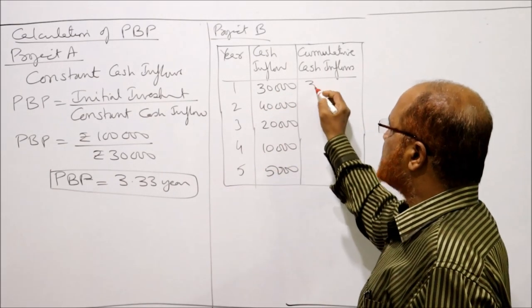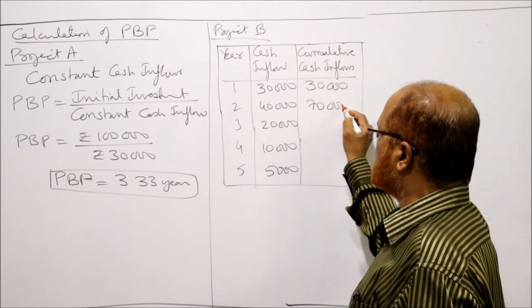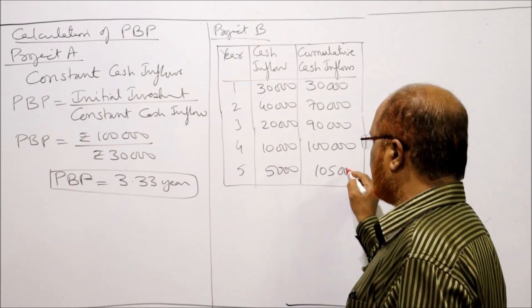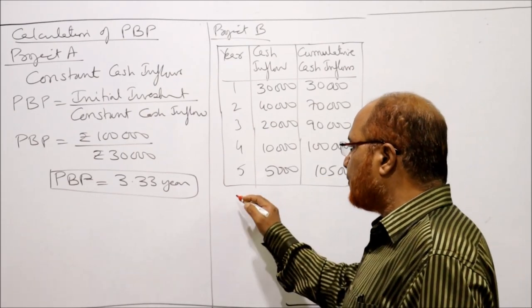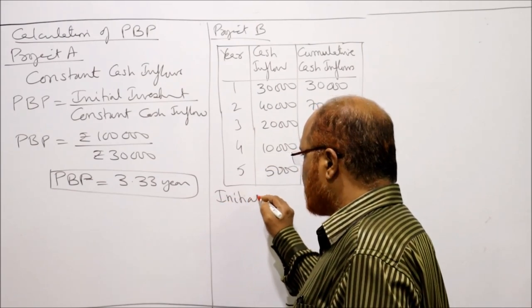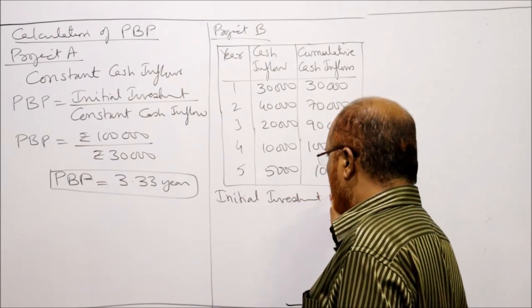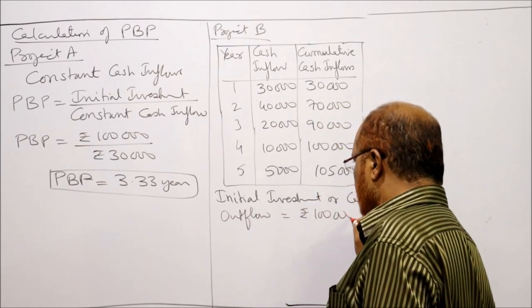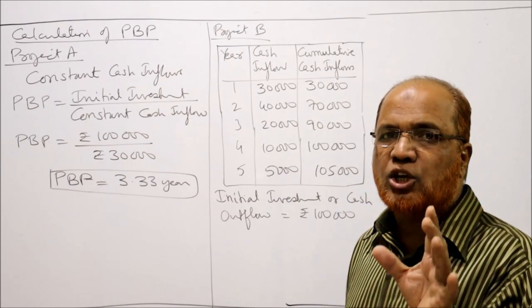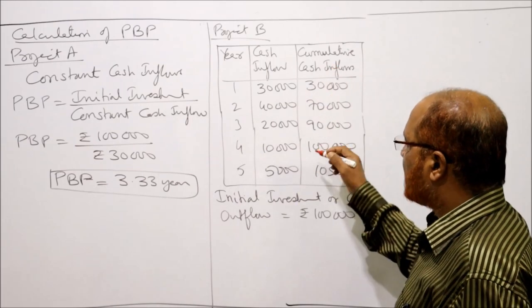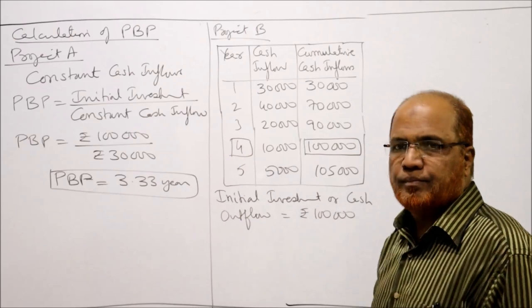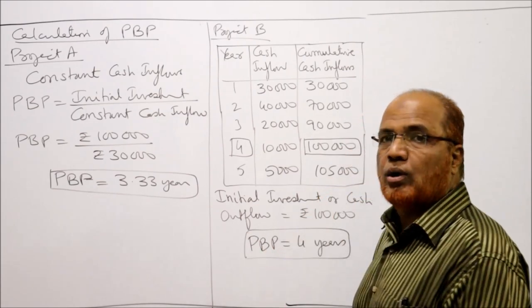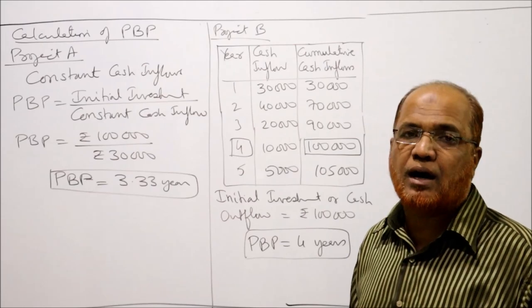We accumulate the cash inflows: Year 1 = 30,000; Year 2 = 30,000 + 40,000 = 70,000; Year 3 = 70,000 + 20,000 = 90,000; Year 4 = 90,000 + 10,000 = 1,00,000. The initial investment is Rs. 1,00,000. Searching for Rs. 1,00,000 in the cumulative column, it falls against Year 4. So the payback period for Project B = 4 years.